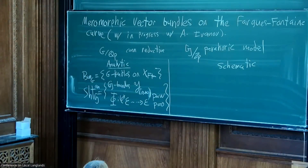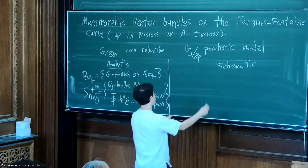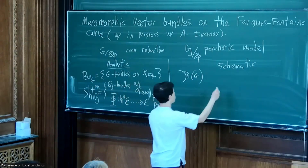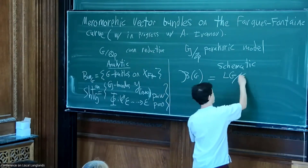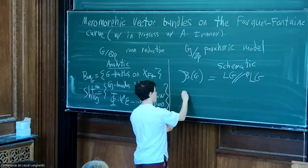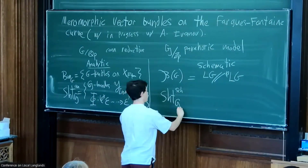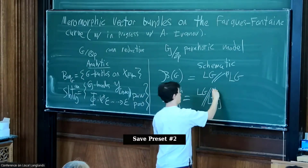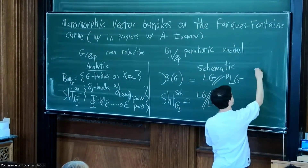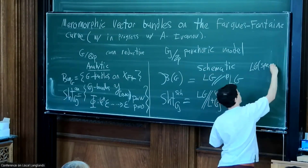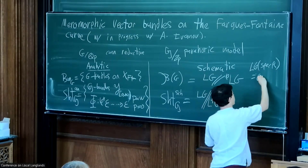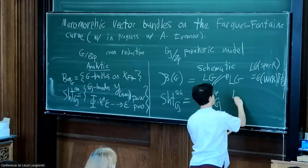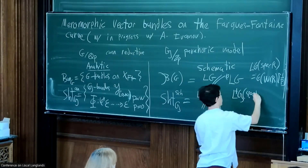On the schematic side, the main players are the Kottwitz stack, which you can think of as taking the loop group and modding by a Weil-action of the loop group itself. You also have a schematic stack of shtukas. A loop group takes Spec R and gives you G of the Witt vectors one over k, and the positive loop group uses just the Witt vectors.